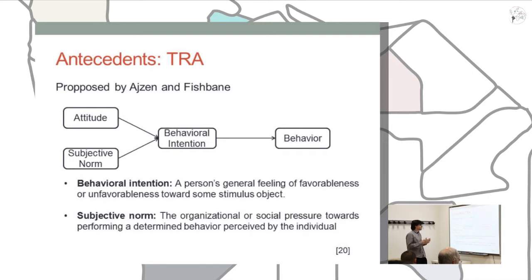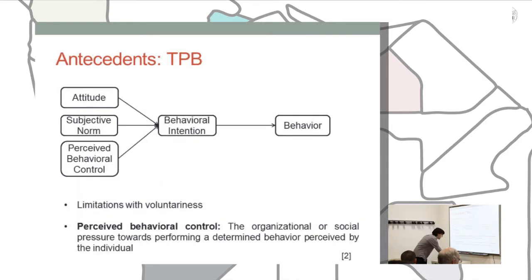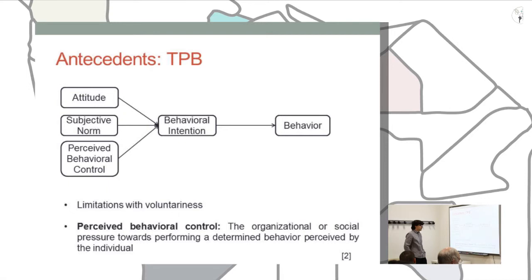When this model was tested in the field, some limitations were found related to involuntary behaviors. So an extension was proposed — the Theory of Planned Behavior — where the concept of perceived behavioral control was added to the scheme, referring to the perception of social pressure toward performing a determined behavior as perceived by the individual.